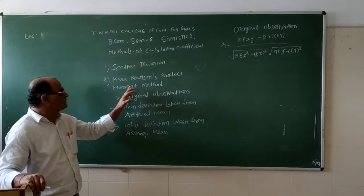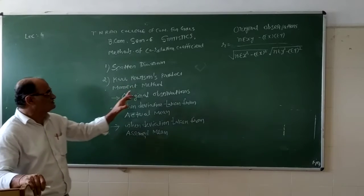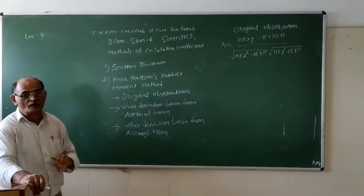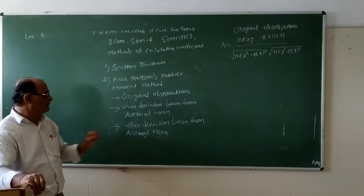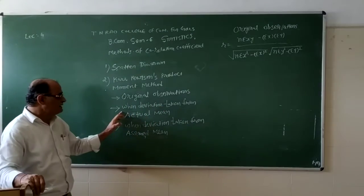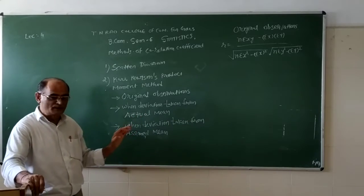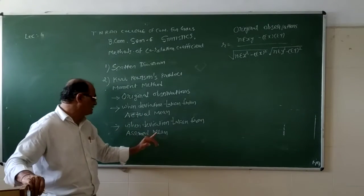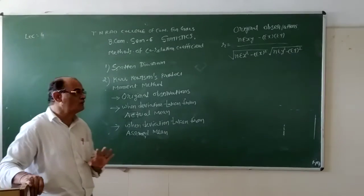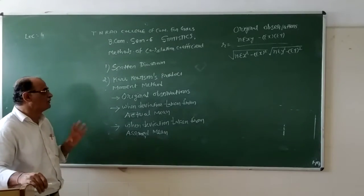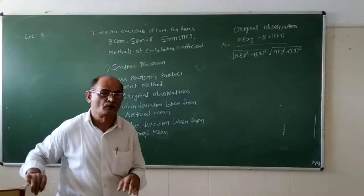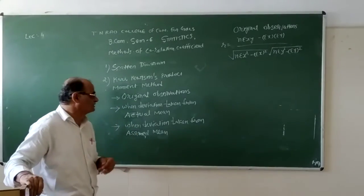That's why a new method was given, similar to the product moment method, which is divided into three parts: original observation, when the deviation is taken from the actual mean, and when the deviation is taken from an assumed mean. You can use any method for the calculation of the correlation coefficient, and there are three methods available.